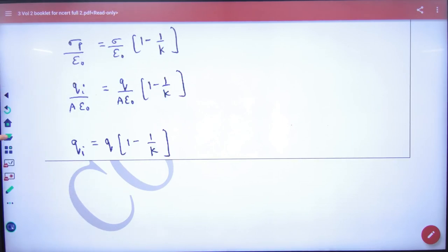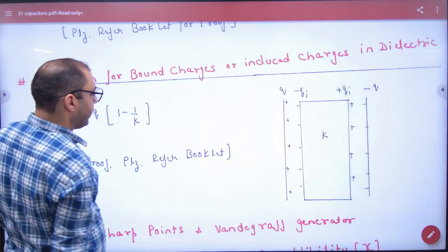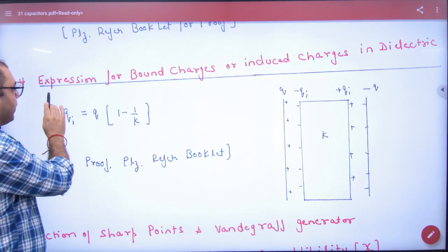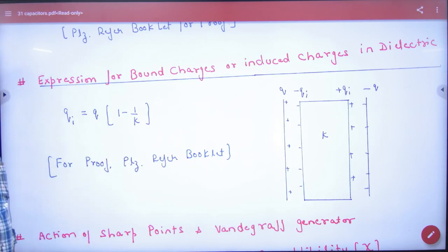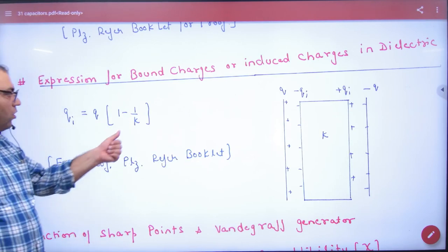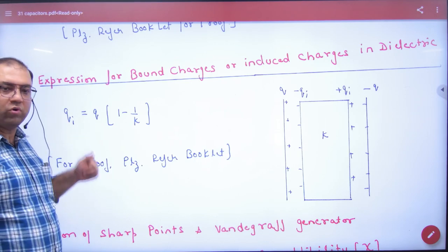In formula booklet you must note this answer. Please note this with diagram: bound or induced charge in dielectric formula. Because conductor's dielectric constant is infinity, so one by infinity is zero. So charges will be equal and opposite.